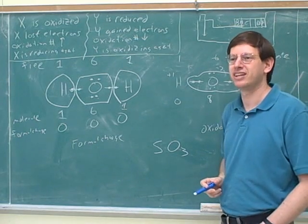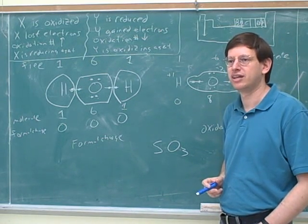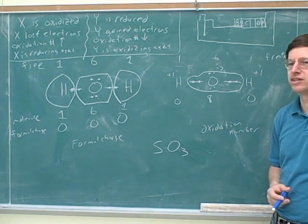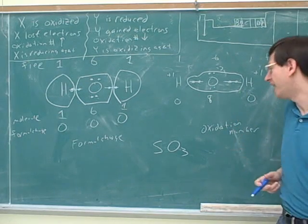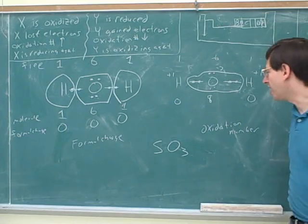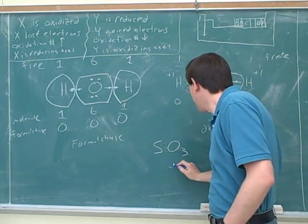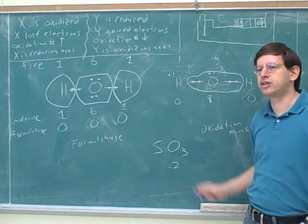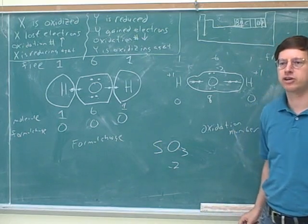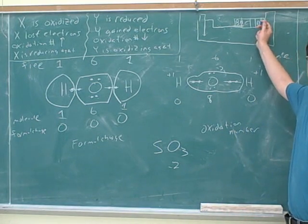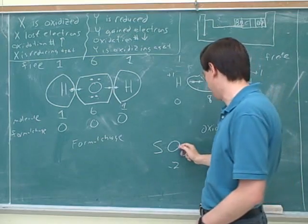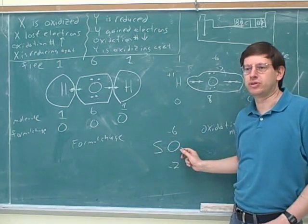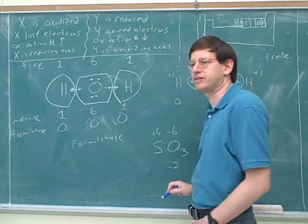For SO3: oxygen is minus 2 each, so three oxygens give minus 6 total. That tells us the sulfur must be plus 6, because the molecule is neutral overall. So if the oxygens contribute negative 6, the sulfur has to be plus 6. That's a lot faster than drawing the full Lewis structure. Each oxygen has a negative 2 charge because oxygen is the most electronegative element here and takes electrons away from the sulfur — two electrons each to reach its noble gas configuration.